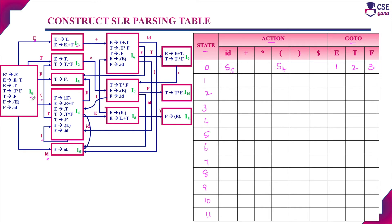Next, move to state I1. From I1 with the plus symbol (a terminal), the new state is I6, so we enter S6 in the action part. The first production in I1 is a final item — all final items are considered for the reduce move only. So I1 state is now over.